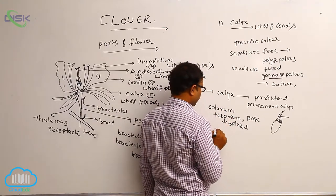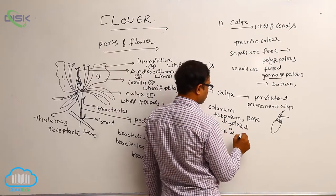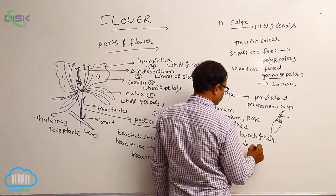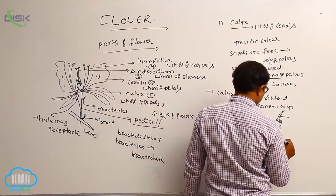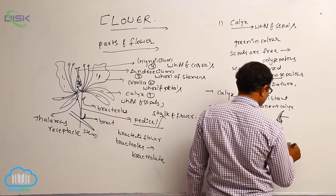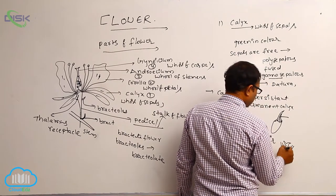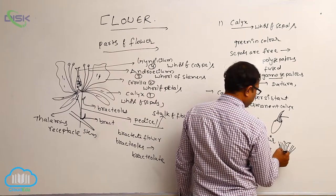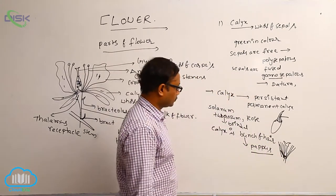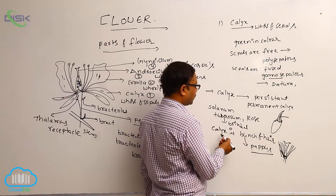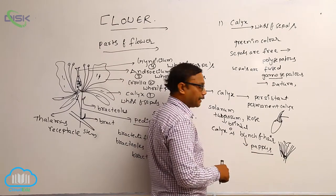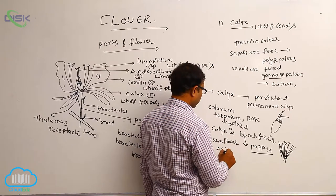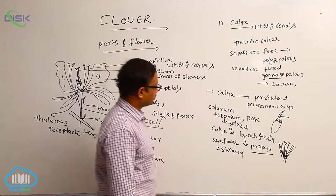In some plants, calyx is a hair-like structure — a bunch of hair. This bunch-of-hair calyx is known as pappus. For example, in Asteraceae family, in sunflower, the small florets have a bunch of hair-like structure outside — that is known as calyx. It is a persistent calyx. This persistent calyx is known as pappus. In all Asteraceae family flowers, this pappus type of calyx is shown.